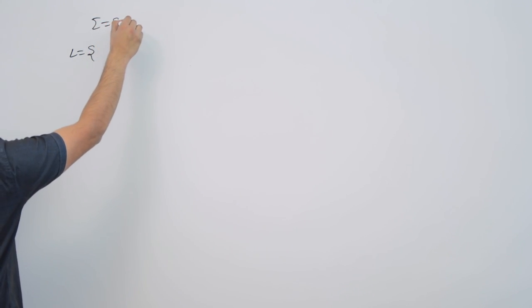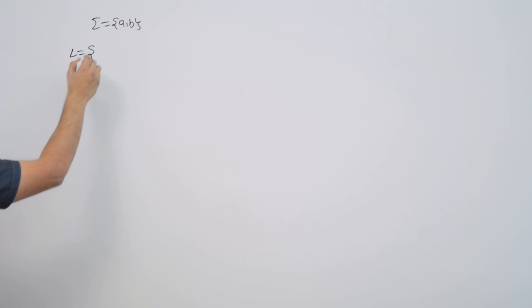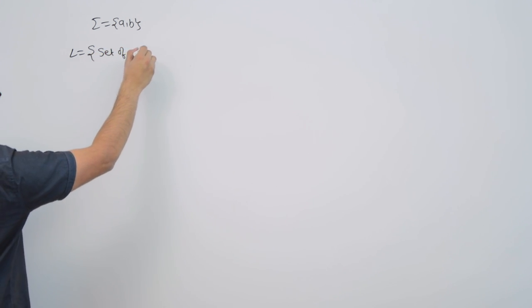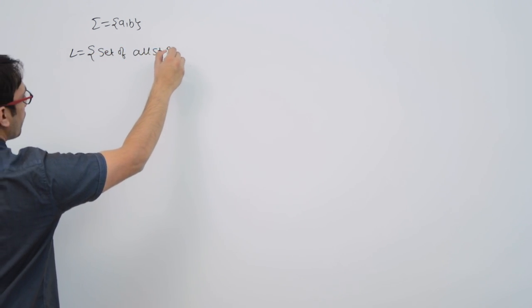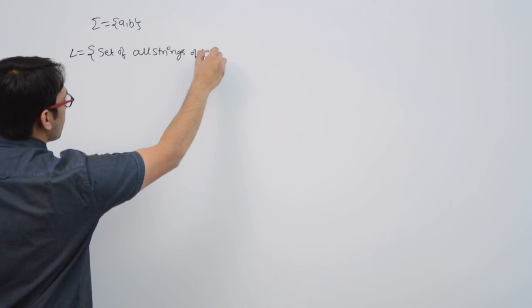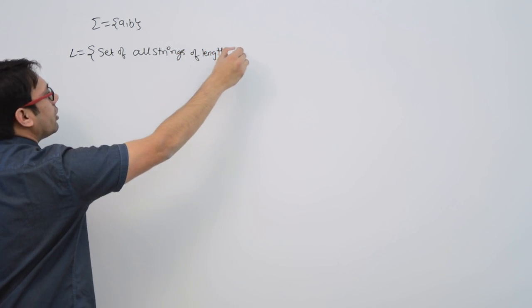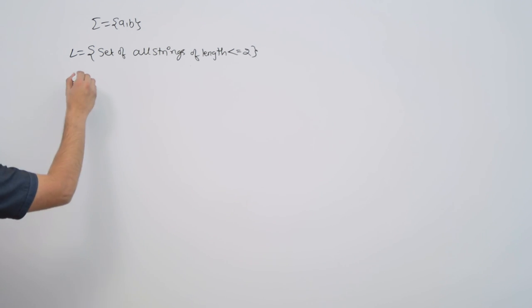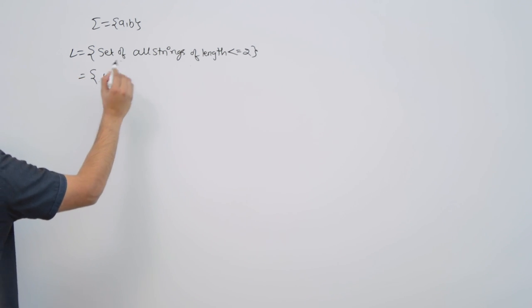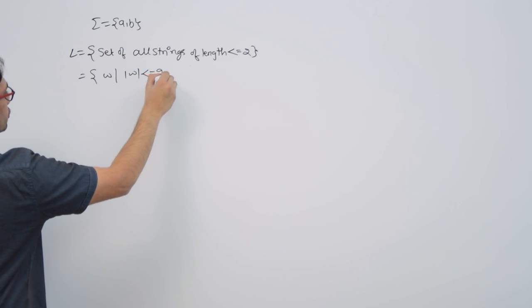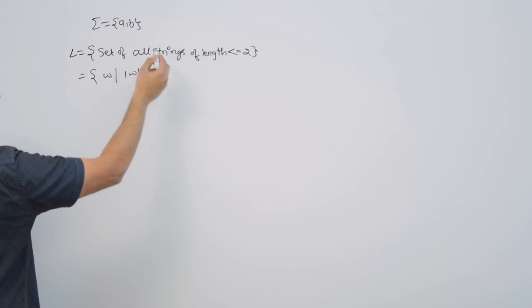Now let us take a few more examples of languages and try to represent regular expressions for those languages. Assume the language L over Σ = {a, b} is the set of all strings of length less than or equal to 2, or you can say it is {w | |w| ≤ 2} for Σ = {a, b}.